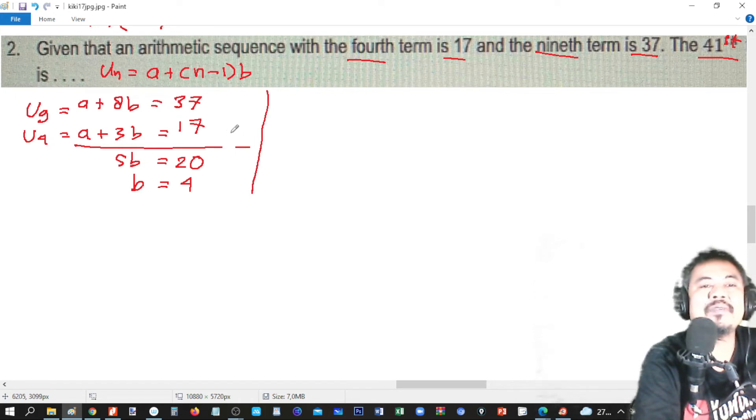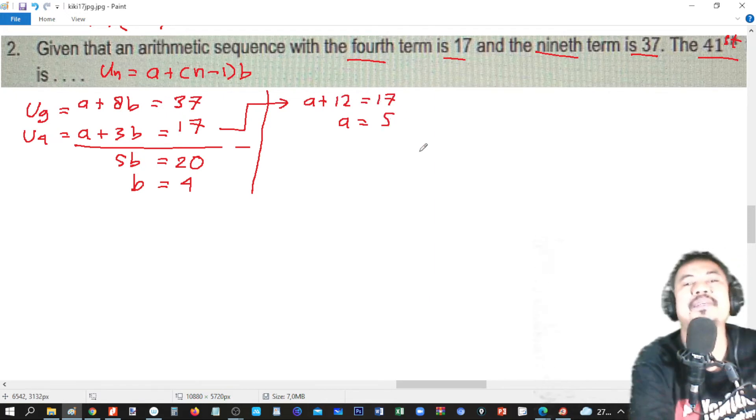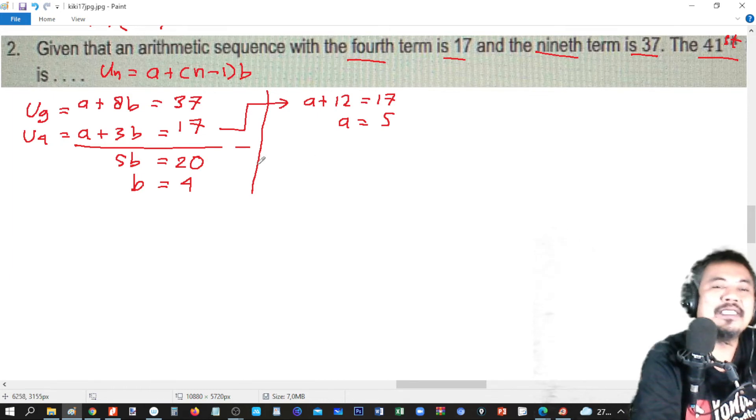We got b. So, we will find a. We will use this equation. A plus 3b. B is 4. Then, 3 multiplied by 4 is 12. It is equal to 17. And then, we find that a equals 17 minus 12. So, we find that b is 4 and a is 5.